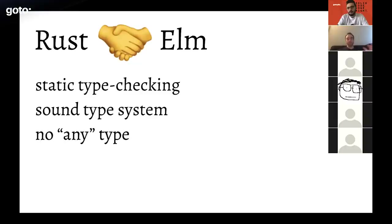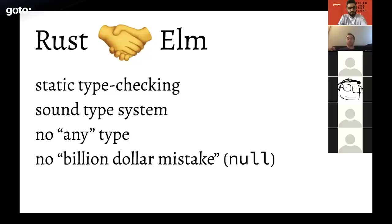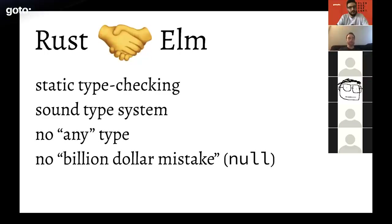Neither language has an 'any' type — the escape hatch found in TypeScript or unsafe casts in C++ — which means you can trust the types much more. Neither has what's known as the billion dollar mistake: the null reference, coined by Tony Hoare, which has led to null pointer exceptions, undefined is not a function, nil errors, and he believes has caused over a billion dollars in economic damage. Rust and Elm handle absent values using tagged unions and similar techniques.